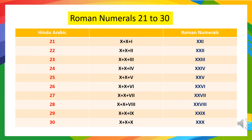Roman numerals 21 to 30. Let's learn how to write Roman numbers 21 to 30. 21 means 10 plus 10 plus 1. The symbol of 10 is X and the symbol of 1 is I, so we will write it as XXI.